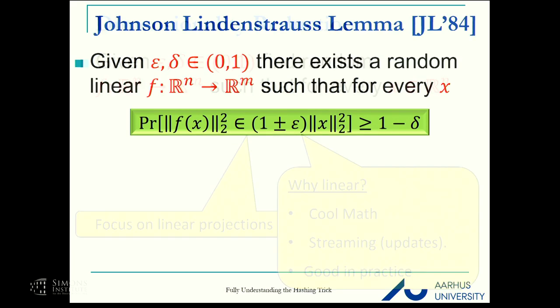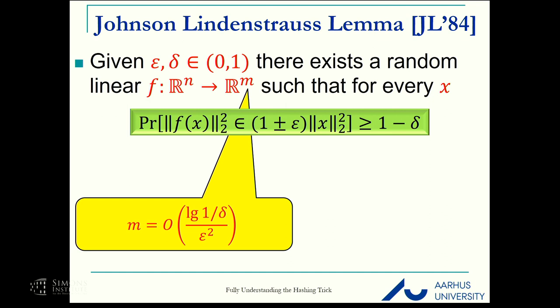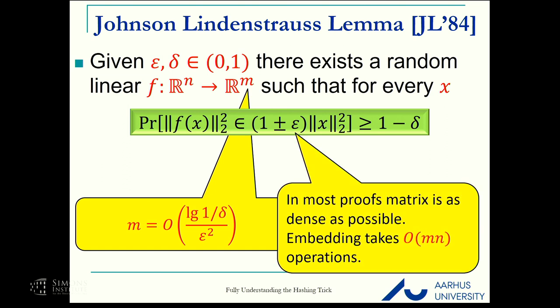This is a very well-known problem with a very well-known solution, the Johnson-Lindenstrauss lemma. This can be achieved with m being order of log(1/delta) over epsilon squared. This is known to be optimal, and in most known proofs, the matrix is very, very sparse.